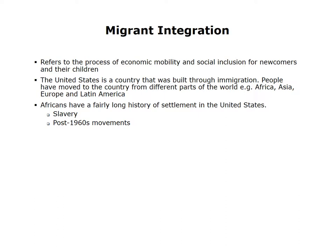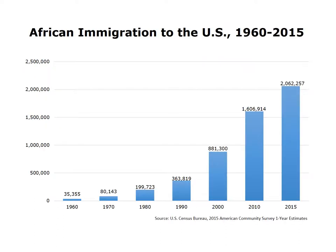To help answer these questions, I used data from the American Community Survey, which is administered by the United States Census Bureau. The African-born population is one of the fastest growing immigrant groups in the United States. Prior to 1960, African immigration was very low, but increased rapidly within the next decade. By 1990 there were more than 360,000 African-born immigrants in the United States — a substantial increase from the 35,000 recorded in 1960. By 2010 the African-born population had increased to 1.6 million, before further rising to 2 million by 2015.